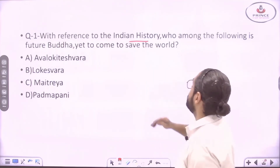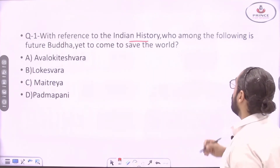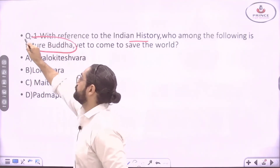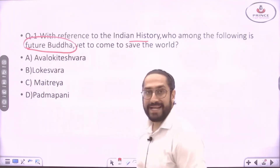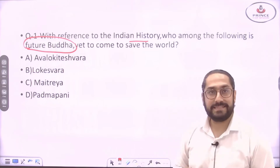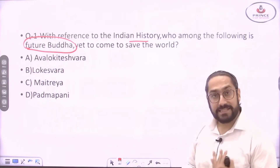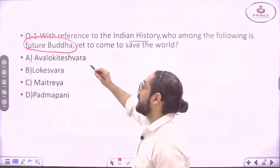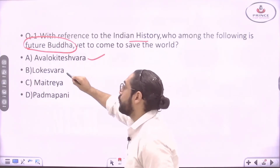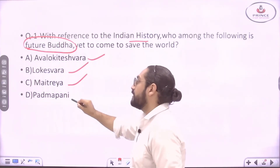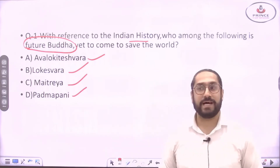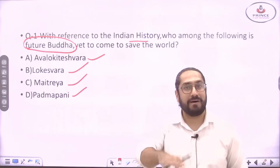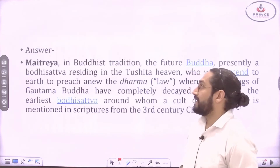Question number one: With reference to Indian history, who among the following is the future Buddha — that is, the Buddha yet to come? The options are: Avalokiteshvara, Lokeshvara, Maitreya, and Padmapani. Pause the video and solve the question.